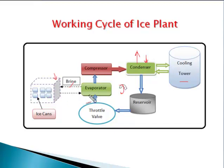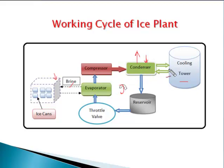This flow takes place from the chilling tank to the evaporator. We get ice inside the ice cans by the brine solution absorbing the heat from them. That heat is sent to the evaporator, and finally this heat is extracted in the condenser by the cooling tower. In this way, we are releasing the heat that was absorbed from the ice cans.